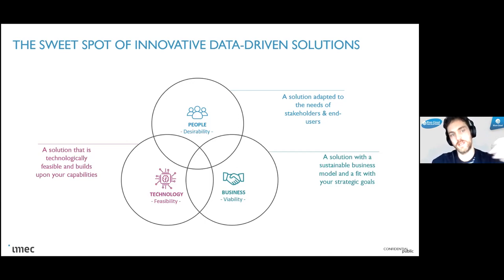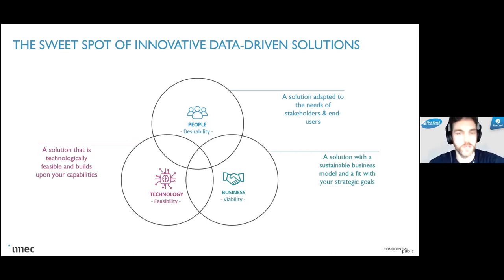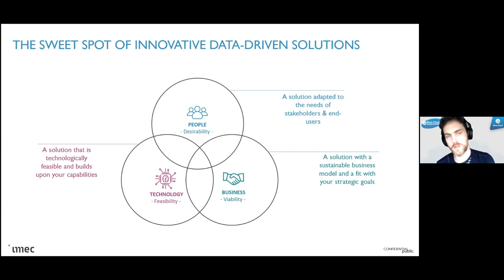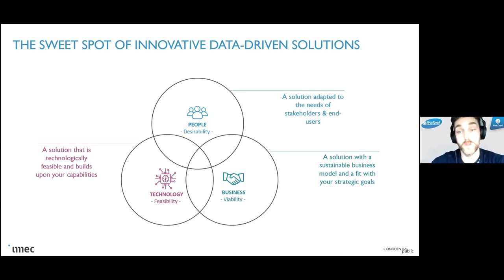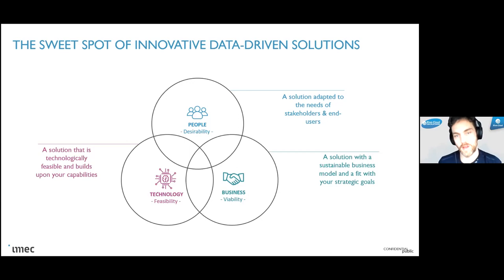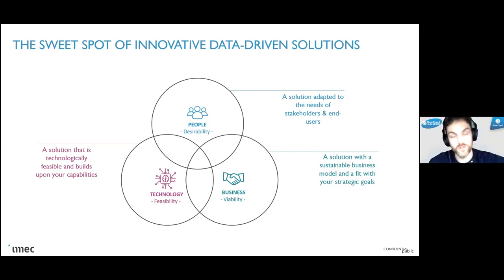The sweet spot of innovative, data-driven solutions requires three elements. First, technology feasibility - your solution must be technically possible using the capabilities available, including the data and resources provided in the hackathon. Second, desirability - your solution should answer a real need of a specific user or stakeholder group. Third, viability - your solution should have a sustainable business model, be affordable, and align with strategic goals.